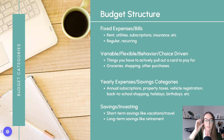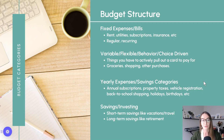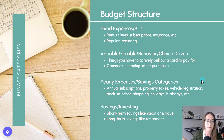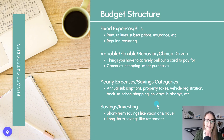So this is the general structure I use with most of my clients. We have your fixed expenses — things that are just going to come out no matter what: recurring, regular. Then we have the variable, flexible, behavior- or choice-driven expenses — things that you have to actively pull out your card to pay for, driven by your choices, behaviors, and habits. These are the things I want you to be focusing on in a budgeting app. Then you have your yearly expenses — things that come out occasionally during the year that you want to be saving for monthly. And then you have your savings: short-term savings like vacation, travel, buying a car, buying a home, and long-term savings like retirement.